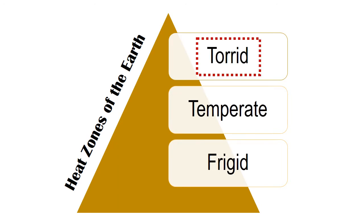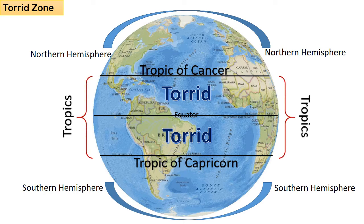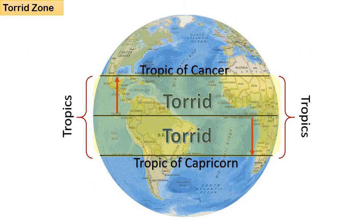Now, let's start with the Torrid Zone. The Torrid Zone is also known as the Tropics. It is the closest to the equator and is the hottest of all three zones. The region from the equator to the Tropic of Cancer in the Northern Hemisphere and from the equator to the Tropic of Capricorn in the Southern Hemisphere forms the Torrid Zone — in other words, the region between the Tropic of Cancer and the Tropic of Capricorn.